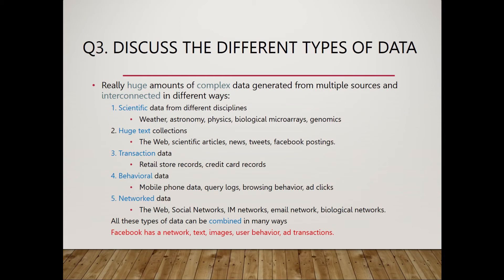Different kinds of data are available on which the data mining process is applied. We have scientific data used in weather, astronomy, physics, genomics, and biological research. Second is huge text collections such as blogs, Facebook postings, tweets, and scientific articles. Third is transactional data such as retail store records and credit card records. Fourth is behavioral data from mobile phone data, query logs, ad clicks, and browsing behaviors. Fifth is network data from social networks, emails, and logical networks.